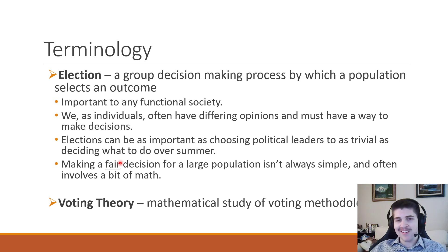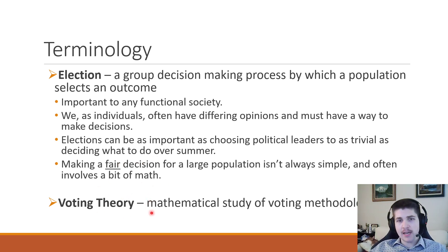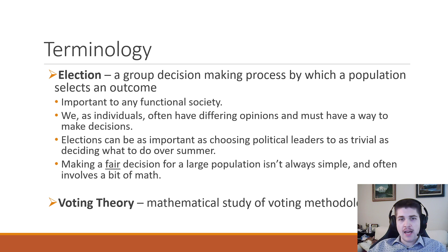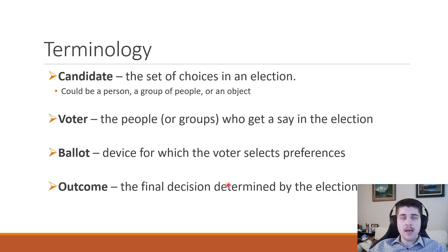Spoiler alert: there isn't really a perfect system, and we're going to examine the math behind that as we work through the chapter. We're going to be focusing on voting theory, which is basically the study of voting methodology on the mathematical side — talking about what are different methods of determining the winner of an election and the fairness of each of those methods.